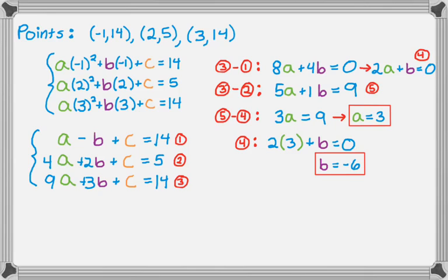So now I know A and B, so I can use any of my first three equations, and I'm going to pick the first one because it has the smallest coefficients, which is what I always recommend you do. So we're using equation 1. So it's going to be A minus B plus C equals 14. So 3 minus negative 6 is 9, 14 minus 9 is 5, so C is 5.